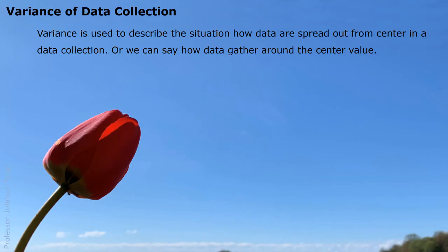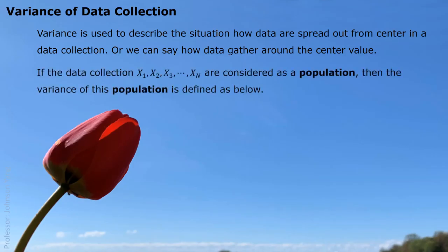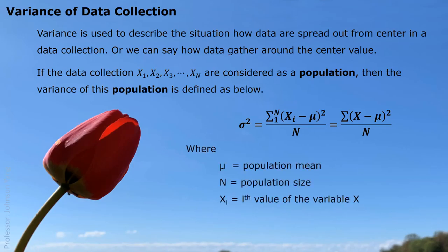The center value is considered as the average value, or we say the mean of the data collection. If the data collection x1, x2, and xn are considered as a population, then the variance of this population is defined as sigma squared. We calculate all the differences from every individual value in this population to the center value, do the square of all these differences, add them together, and then divide by the population size, capital N. Mu represents the average value or center value of this population.